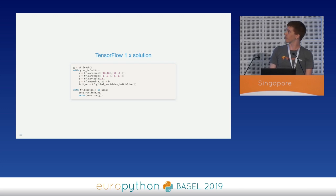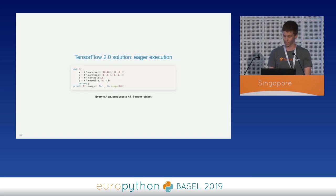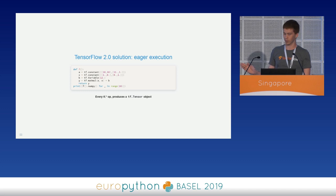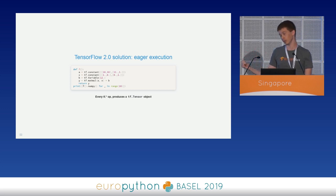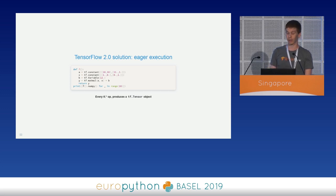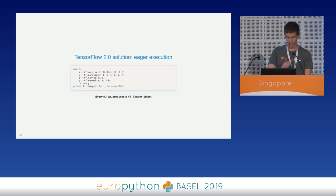In TensorFlow 2, thanks to eager execution, the solution becomes much easier. We just declare the constants and variables, and the computation is executed directly without needing to create a session. We write the code inside a function — executing the function has the same behavior as the previous session.run on the output node. The only peculiarity is that every tf operation like tf.constant and tf.matmul produces a tf.tensor object, not a Python native type or NumPy array. Therefore, we extract the NumPy representation by calling the dot numpy method. We can call the function as many times as we want.